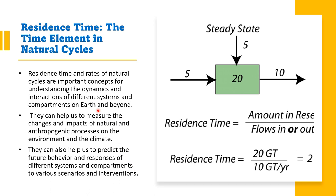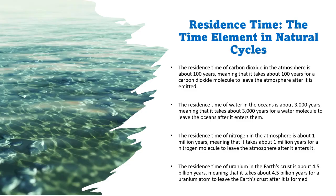Residence time and rate of natural cycles are important concepts for understanding the dynamics and interactions of different systems on Earth. Anthropogenic processes have disturbed the inflow and outflow of many elements. For example, due to anthropogenic processes, more carbon dioxide is released into the atmosphere, increasing its residence time, which overall increases infrared radiation and the greenhouse gas effect.